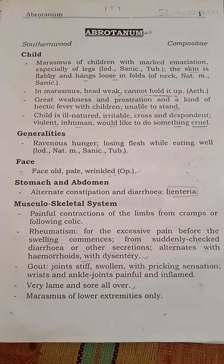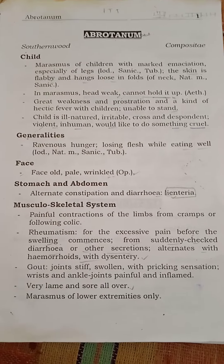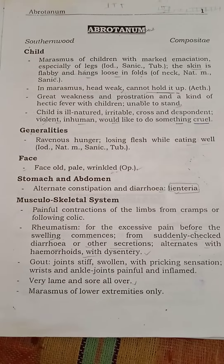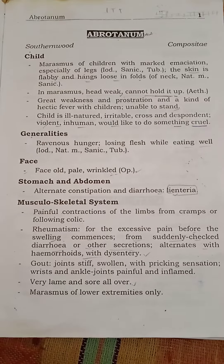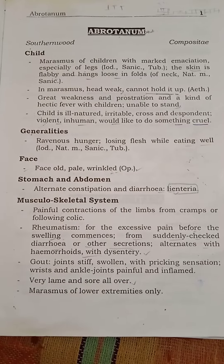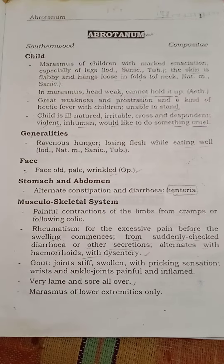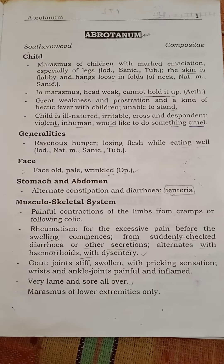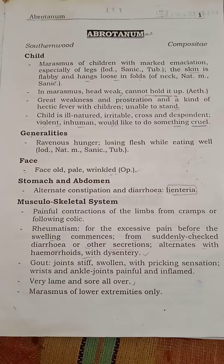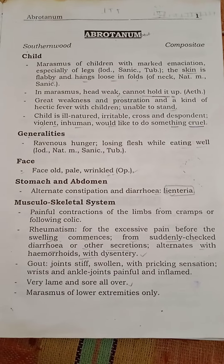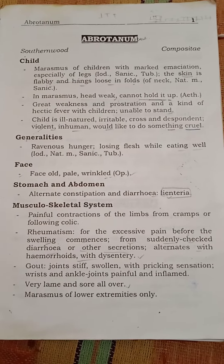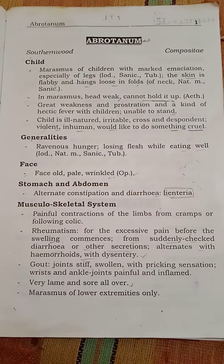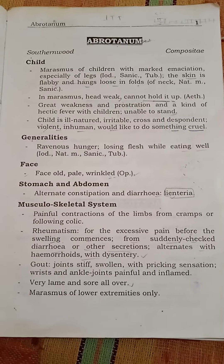Welcome to our YouTube channel. Today we will learn about Abrotanum. The common name of Abrotanum is Southernwood. The family is Compositae. In marasmus of children, there is marked wasting, especially of the legs. The skin is flabby and hangs loose in folds. In marasmus, the head is weak and cannot hold it up, with great weakness.